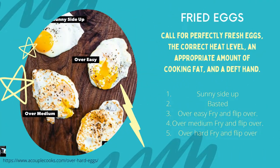Let's move now to the second variety, which is fried eggs. It calls for perfectly fresh eggs, correct heat level, and appropriate amount of cooking fat. It includes different kinds of fried eggs: sunny side up, basted, over easy fry and flip over, over medium fry and flip over, and over hard fry and flip over.